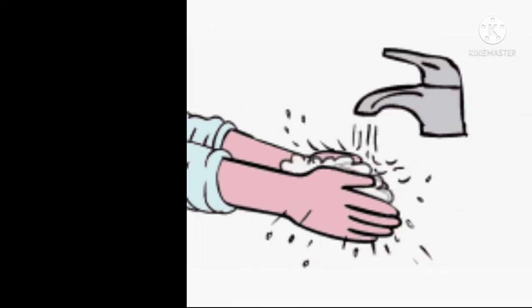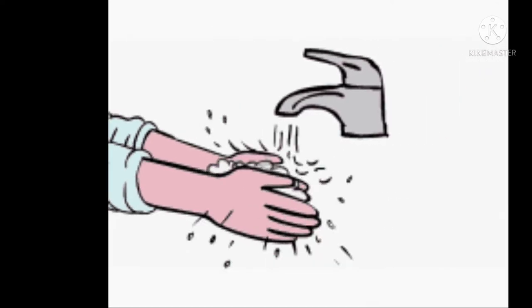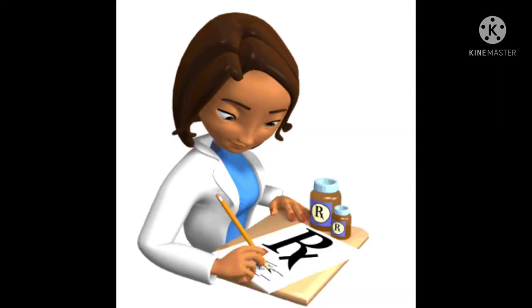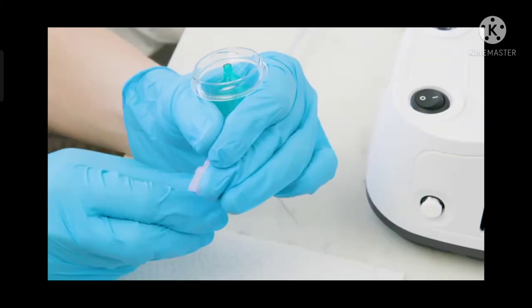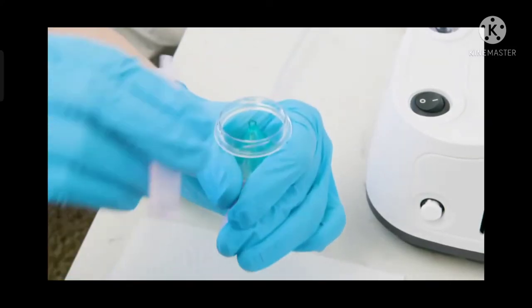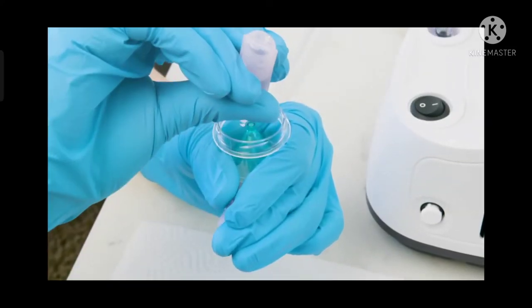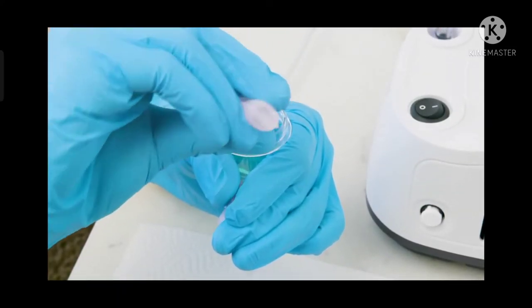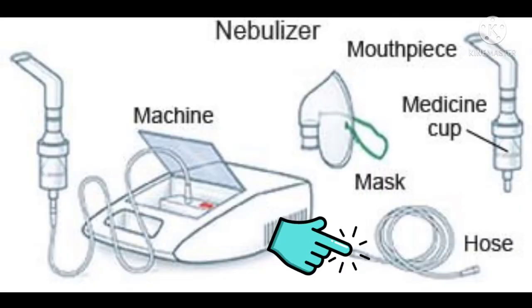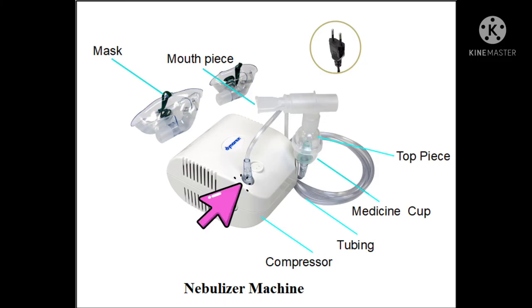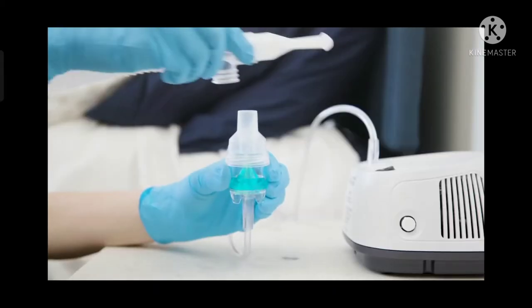First of all, we should wash our hands thoroughly. After washing the hands, we should take the medicine prescribed by the doctor and place it in the nebulizer chamber or nebulizer cup. After that, we should take the hose or tubing, which has two ends — one end should be connected to the compressor.